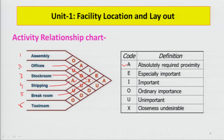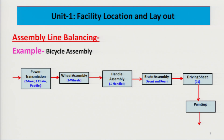Looking at the row for the assembly department, we can see its relationship with all other departments: office is rated O (ordinary important), stock room is A (absolutely required proximity), shipping is I (important), break room is E (especially important), and tool room is A (absolutely required proximity). The Activity Relationship Chart makes it very easy to see the relationship between any two departments.